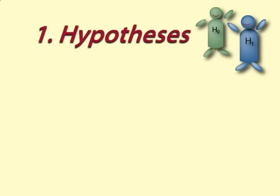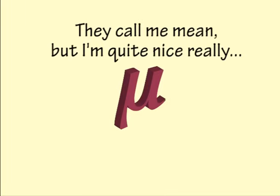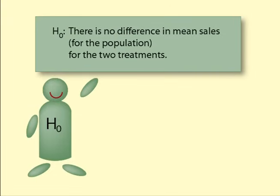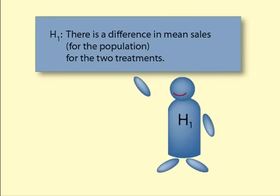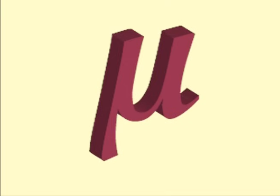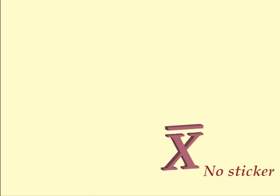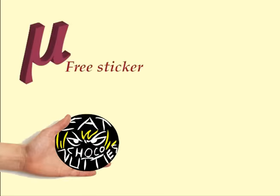The first step is to decide on the hypotheses. There are two different circumstances, sometimes known as treatments: offering a sticker and not offering. The null hypothesis is that there is no difference in the sales for the two treatments. The statistic of interest is the mean or average value of daily sales. The null hypothesis is written H0: there is no difference in mean sales for the population for the two treatments. The alternative hypothesis is written H1: there is a difference in mean sales for the population for the two treatments. Helen thinks the sales could go up or down as a result of offering a free sticker. We use mu, a Greek letter, to represent the population mean — the mean sales for all days that chocolate nutties are sold. The subscript 'free sticker' or 'no sticker' indicates whether we are talking about the population mean for days when a free sticker is offered or when it is not.